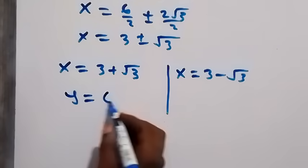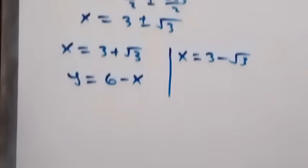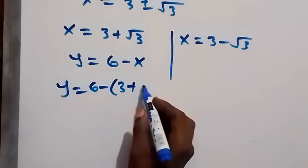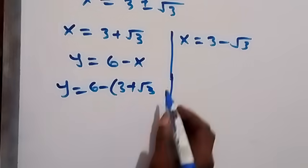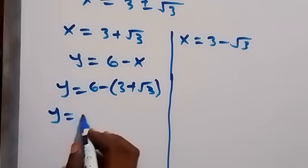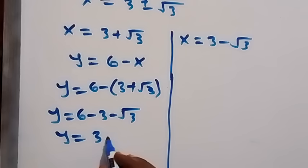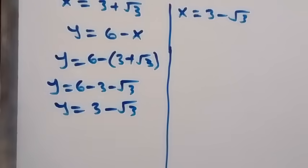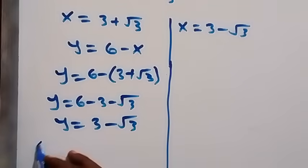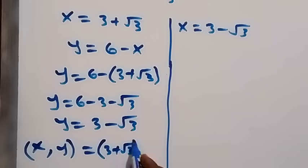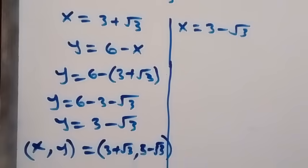We can also find y using the equation y equals six minus x. For the first case, y equals six minus (three plus root three), which gives y equals six minus three minus root three, so y equals three minus root three. Therefore the first solution pair is x comma y equals (three plus root three, three minus root three).